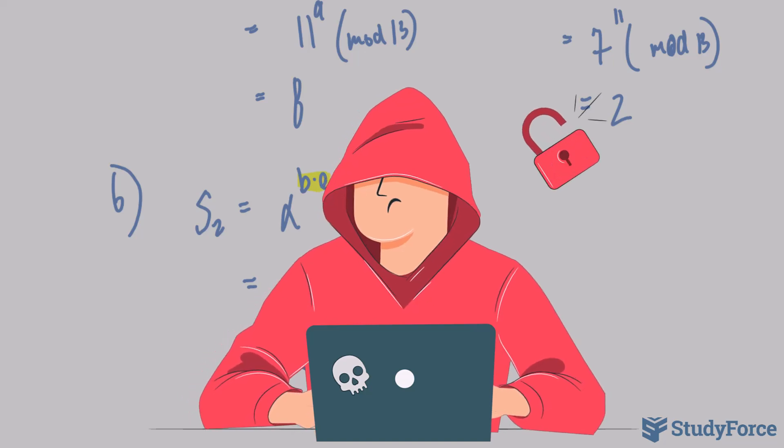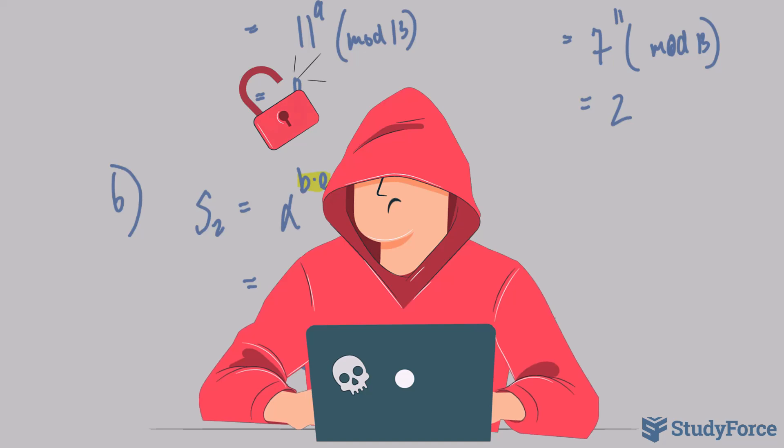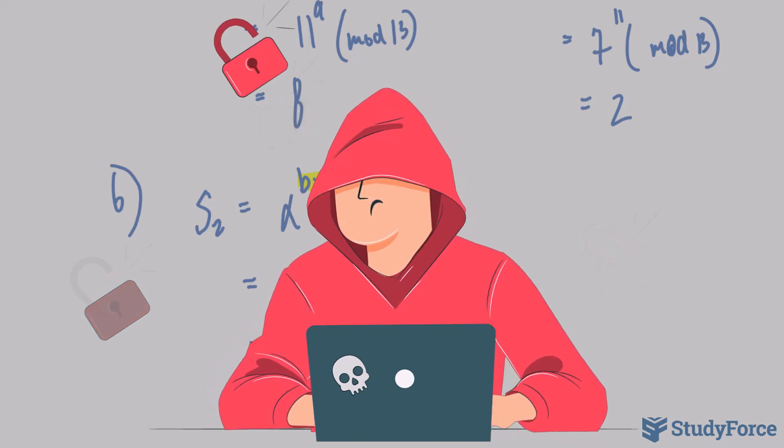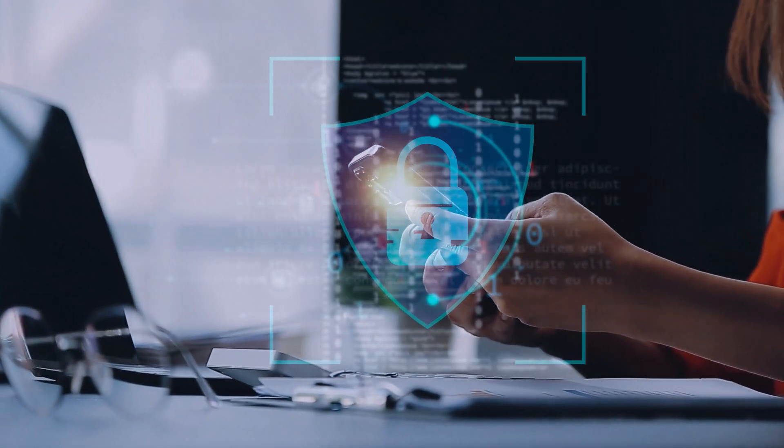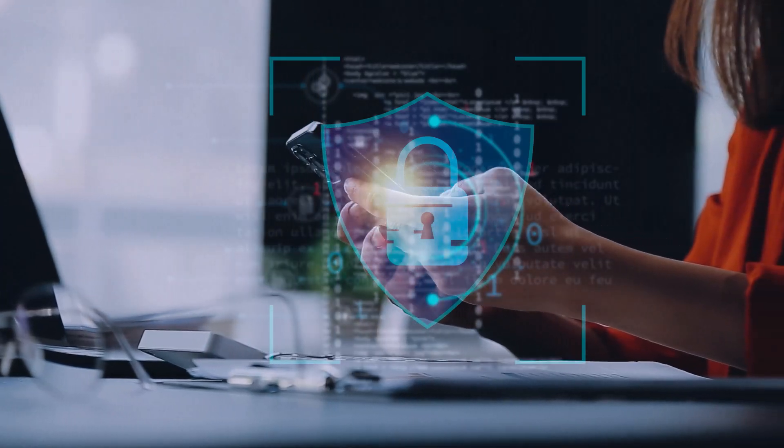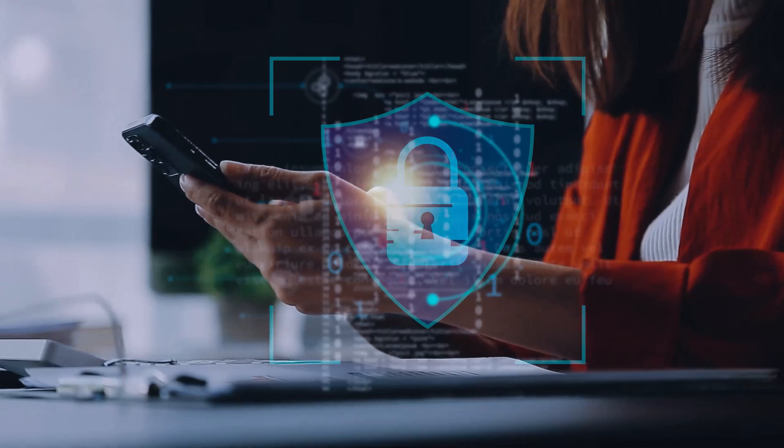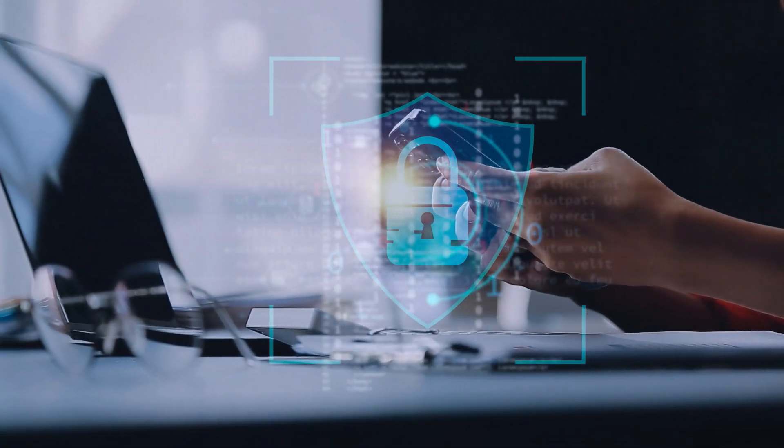Now this attack demonstrates how an adversary can intercept and manipulate communications in an unsecure channel. This highlights the importance of additional security measures, such as things like authentication to prevent a man-in-the-middle attack. So the next time you're asked to input your phone number or to authenticate a login, be mindful that there may be a man-in-the-middle attack, and those features have been proven to prevent an attack such as this one.